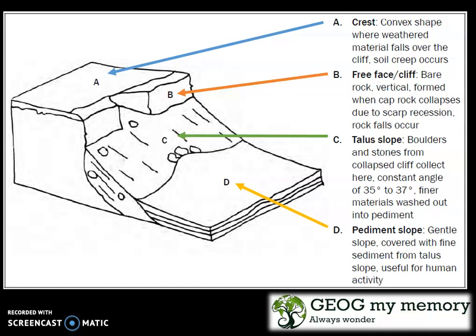And D is your pediment slope. This is a gentle slope covered with fine sediment from the talus slope. It is useful for human activity.